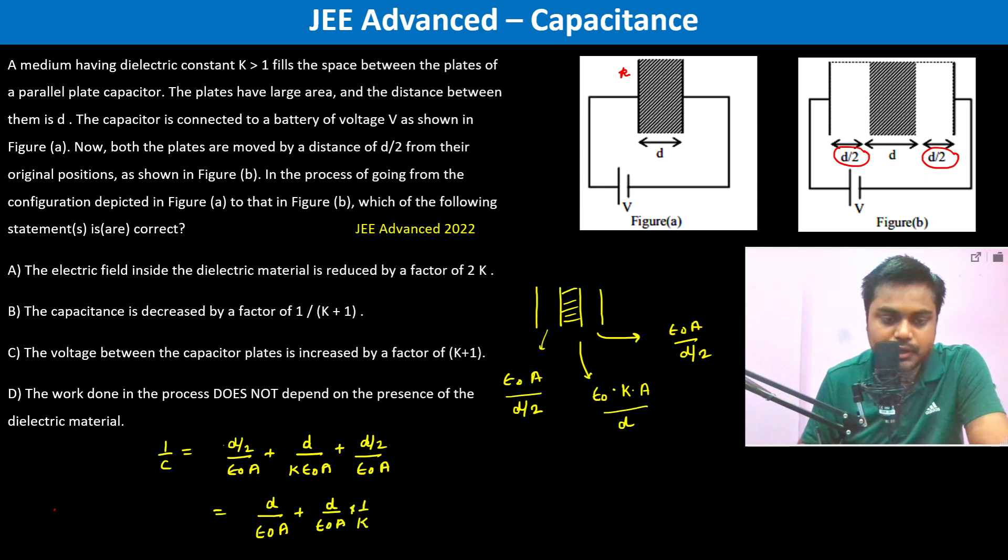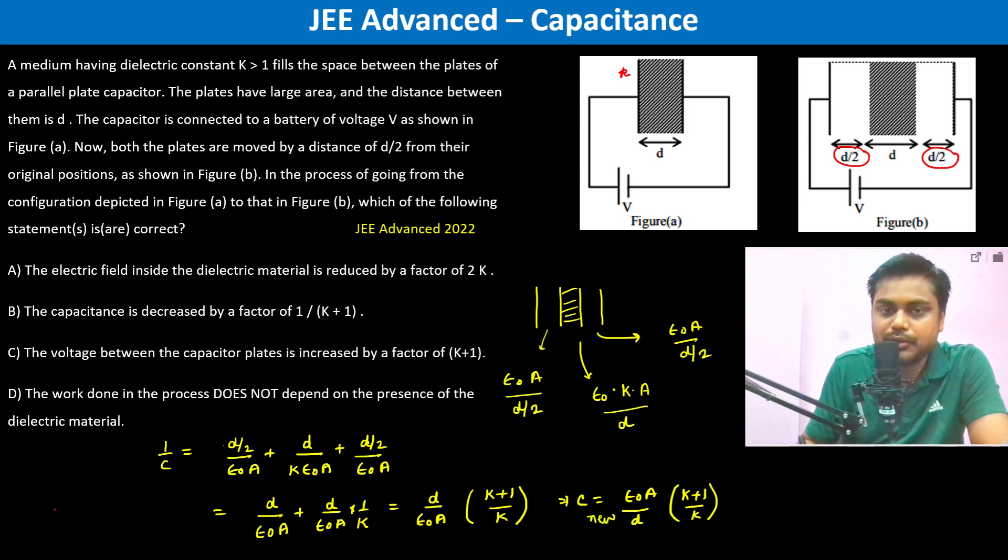So C becomes ε₀A/d times k/(k+1). Now previously, initially, this is C_new. The C_old was epsilon not A times k divided by d.